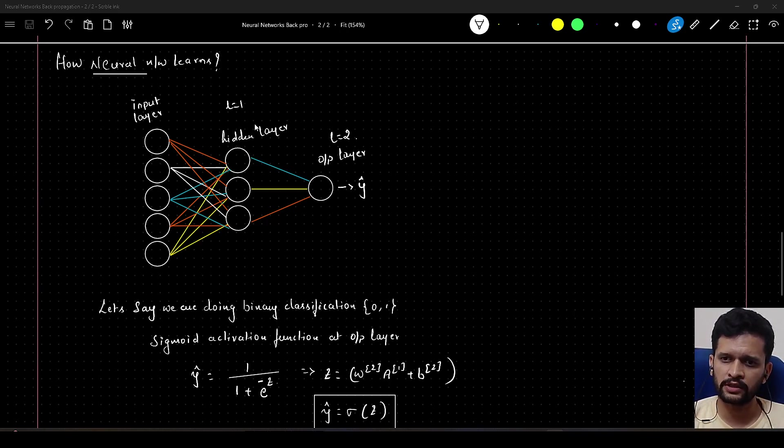The input layer has 5 neurons, hidden layer has 3 neurons, output layer has 1 neuron. Let us say the task for this neural network is a binary classification task, so its job is to predict either 0 or 1.